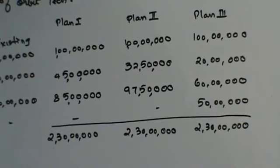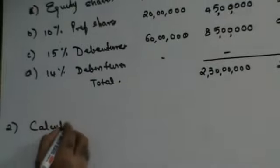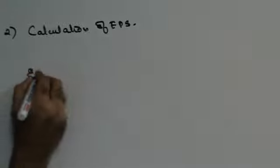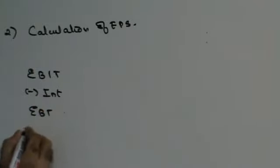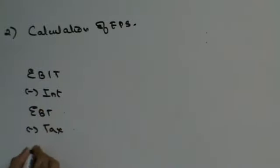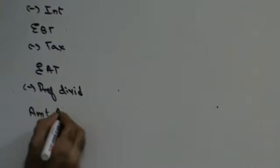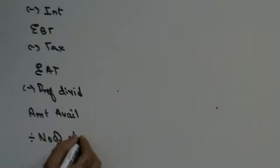Which proposal will you select? We need to calculate the EPS to decide the proposal. The calculation of EPS involves: EBIT, less interest gives EBT, less tax gives EAT, less preference dividend gives amount available to equity shareholders, divided by number of shares gives EPS.